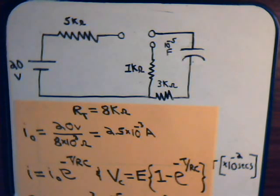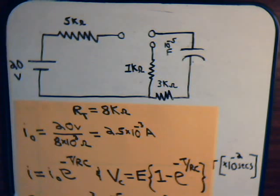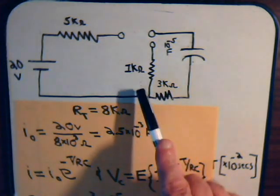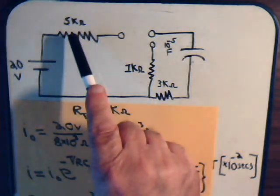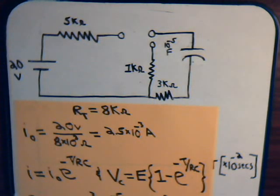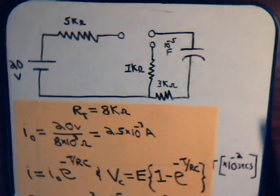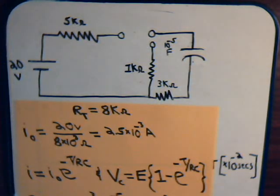In this video we're going to talk about the charging and discharging of a capacitor in a relatively simple circuit. Here we have a 20 volt battery, a 3 kilo-ohm, a 1 kilo-ohm, and a 5 kilo-ohm resistor, and a capacitor with capacitance of 10 to the minus 5 farads.